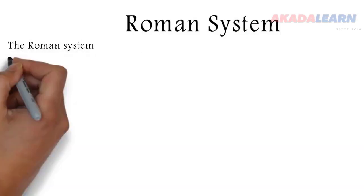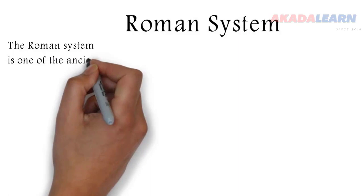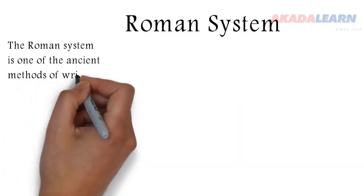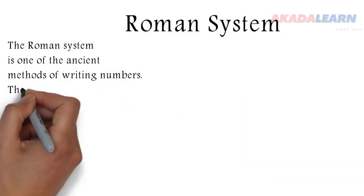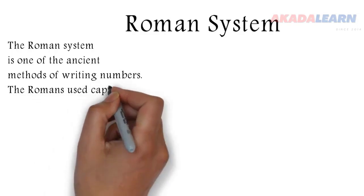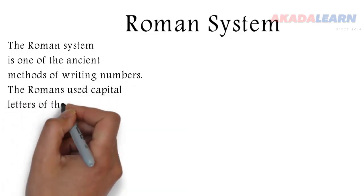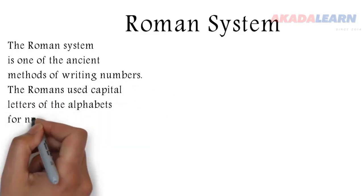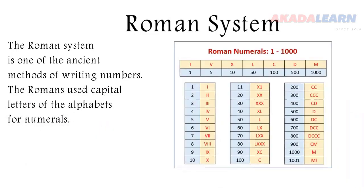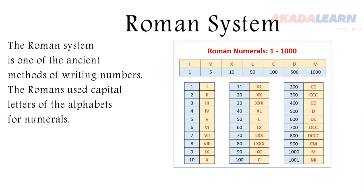The Roman system is one of the ancient methods of writing numbers. The Romans used capital letters of the alphabets for numerals. You can see our table there showing the Roman numerals from 1 to 1000. So study the table closely to see how the numbers are formed.